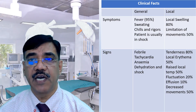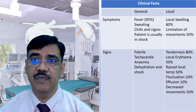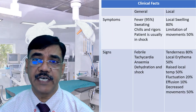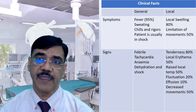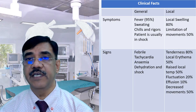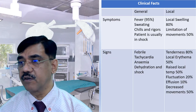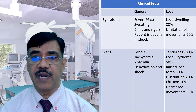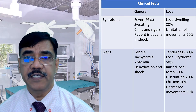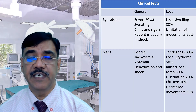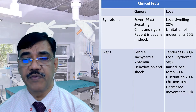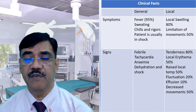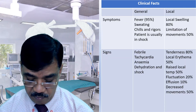The signs and symptoms chart shows general and local features. General symptoms include fever in 95% of cases, sweating, chills, and rigors; the patient may be in shock. Local symptoms include local swelling in 80% of cases and limitation of movements in 50% of cases. General signs include the patient being febrile, tachycardia, anemia, dehydration, and shock. Local signs include tenderness in 80% of cases, local edema in 50%, raised local temperature in 50%, fluctuation in 20%, effusion in 10%, and decreased movements in 50% of cases.